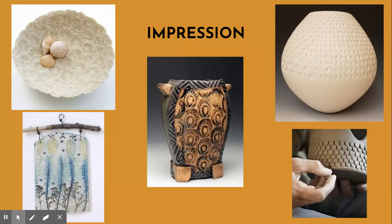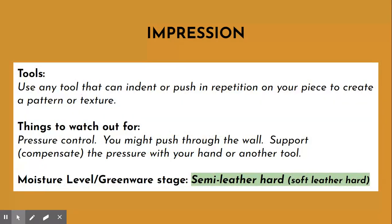The next technique is impressions. Impressions can come from anything — anything that you press into soft clay can leave an impression. This is neither additive nor subtractive, however you'll see high relief and low relief in many of these examples. The tools you would use are any tool that can push or indent, and you can create repetition on your piece to make a pattern or texture. Things to watch out for are pressure control — the potential to push through the wall is strong, especially if the vessel is already created and the clay is soft. You want to support the pressure on the other side with your hand or another tool, which is called compensating the pressure. The moisture level should be semi leather hard.